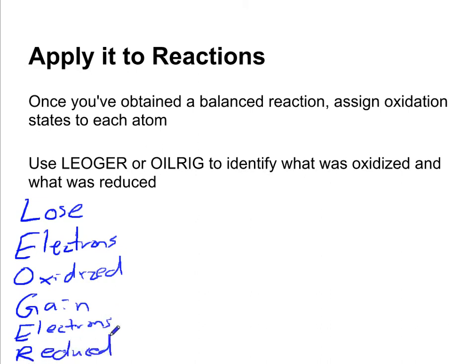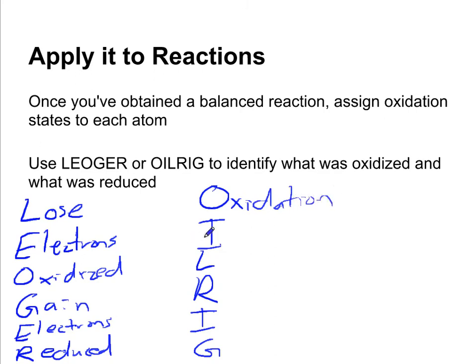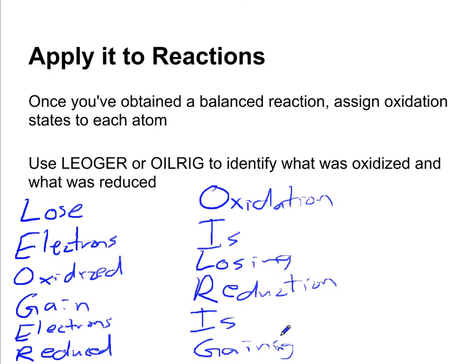LEO-GER — Leo the lion says GER — stands for Lose Electrons Oxidized, Gain Electrons Reduced. The atom that loses electrons is said to be oxidized, and the atom that gains electrons is said to be reduced. OIL-RIG stands for Oxidation Is Losing and Reduction Is Gaining — referring to electrons. If something is oxidized, it loses electrons, making its oxidation state more positive. If something is reduced, it gains electrons, taking on extra negative charge, so its oxidation number is driven down and becomes more negative.